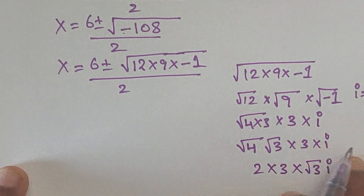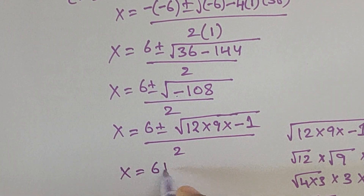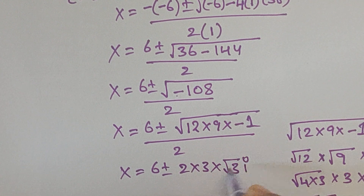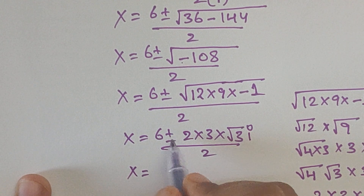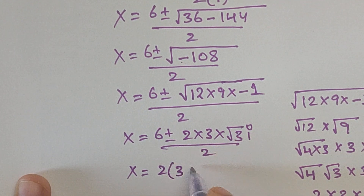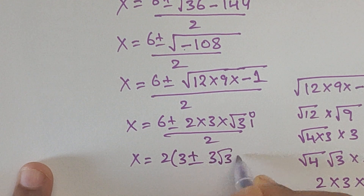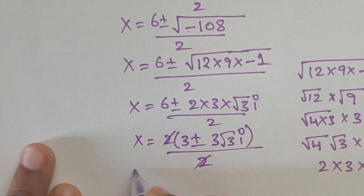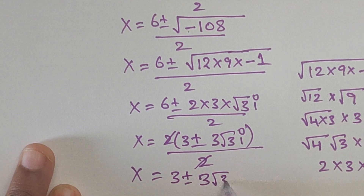So x equals 6 plus or minus 2 times 3 times square root of 3i, divided by 2. Taking out the common factor 2: 2 times 3 equals 6, so x equals 6 plus or minus 6 square root of 3i, divided by 2. Cancelling the 2, we get x equals 3 plus or minus 3 square root of 3i.